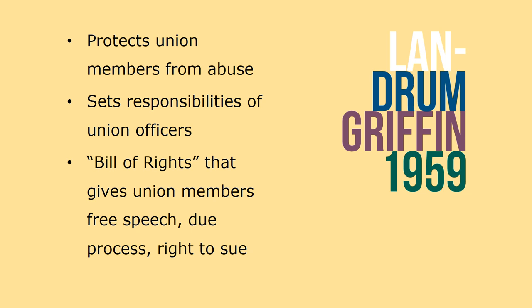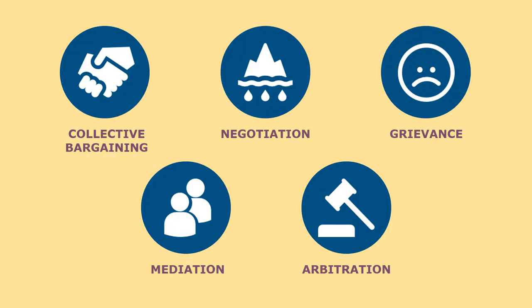The Landrum-Griffin Act outlines the responsibilities of union officers as well as the rights of union members via a Bill of Rights that gives union members the right to free speech and due process, the opportunity to be involved in the nomination process for the election of union leaders, and the right to receive copies of their collective bargaining agreements as well as the right to sue their unions. Now that we understand the legislative foundation for labor relations, let's talk about the lingo. To be effective in labor relations, there are a few terms you should be familiar with.